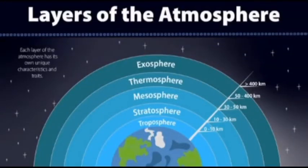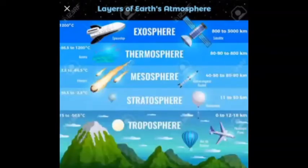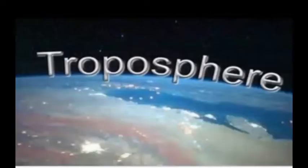Now let's learn about the layers of the atmosphere. The first layer is the troposphere, the second is the stratosphere, the third is the mesosphere, the fourth is the thermosphere, and the last layer is the exosphere.